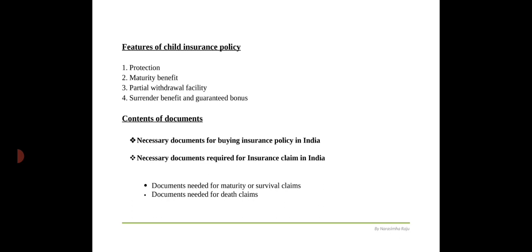The necessary documents for purchasing a life insurance policy in India are listed here. There may be different documents required for different types of life insurance plans. Buying insurance plans has become quite simple due to the availability of online platforms, which allow you to buy a policy from your home or office. Whenever you buy a policy, whether online or through insurance agents, you are required to submit a set of documents to the insurance company. An insurance policy is a legal contract and insurance documents are needed to establish the legality of the contract. After the insurance company verifies the submitted documents, the insurance policy is issued.